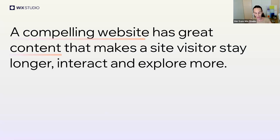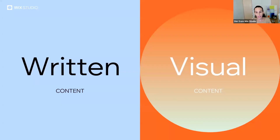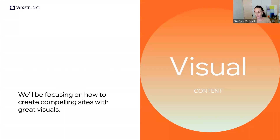A compelling website has great content that makes the visitor stay longer, interact, and explore more. Website content can be split into two types: written content — all the text and words that tell the site's story — and visual content, which includes design choices like colors, typography, images, videos, and animations. Many times we treat visual content as subtext, but today I want to turn visual content into a hero and focus on how to create compelling sites with great visuals.